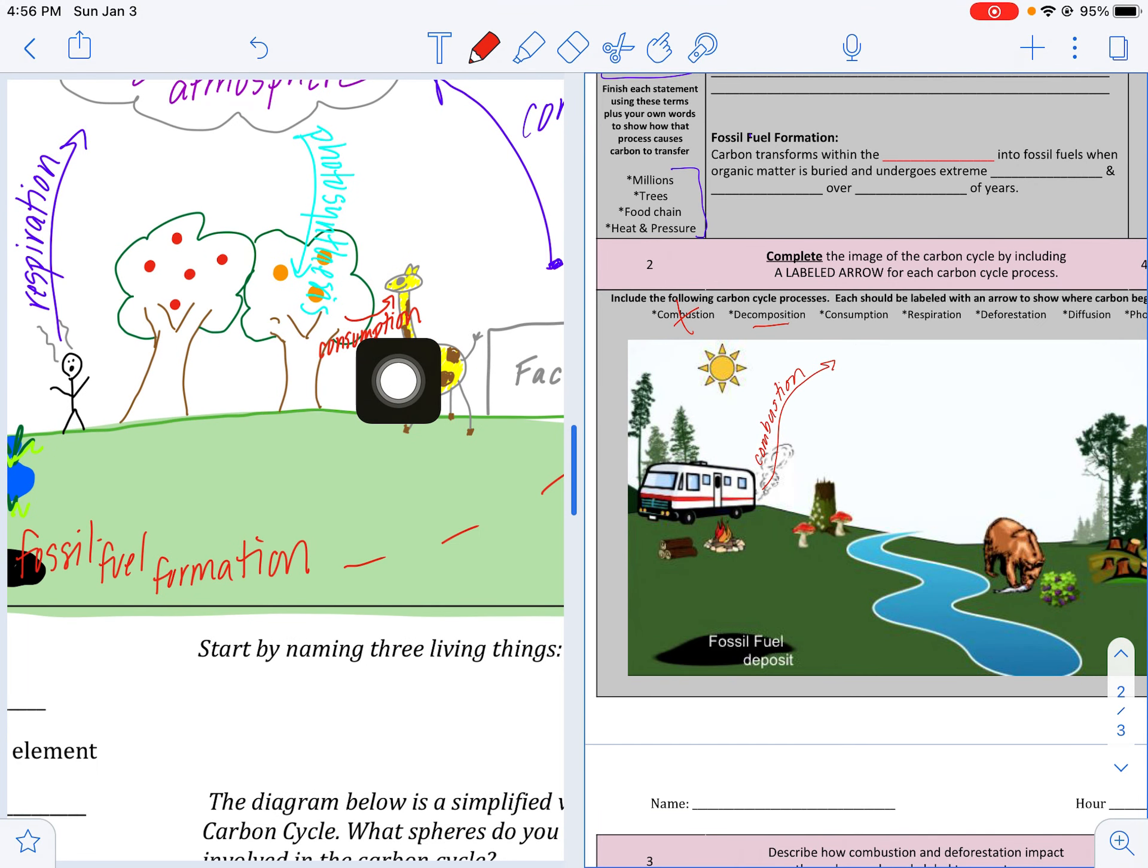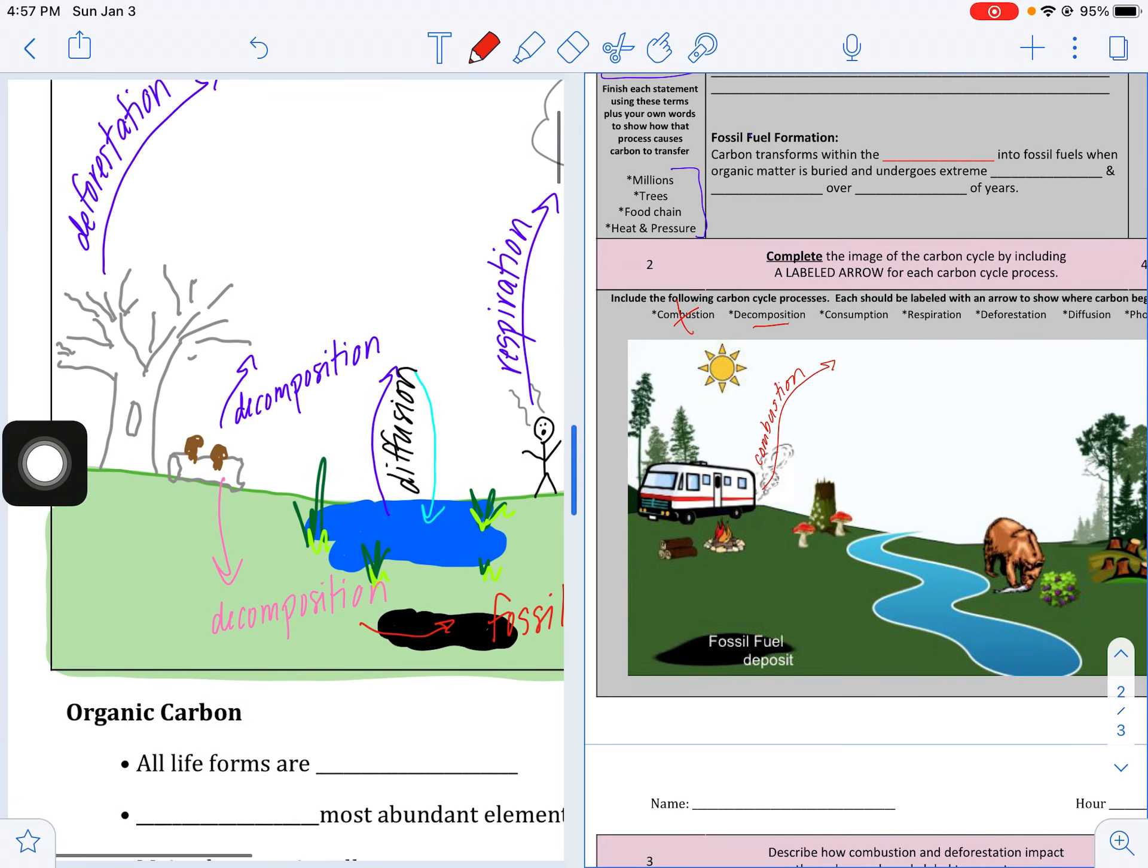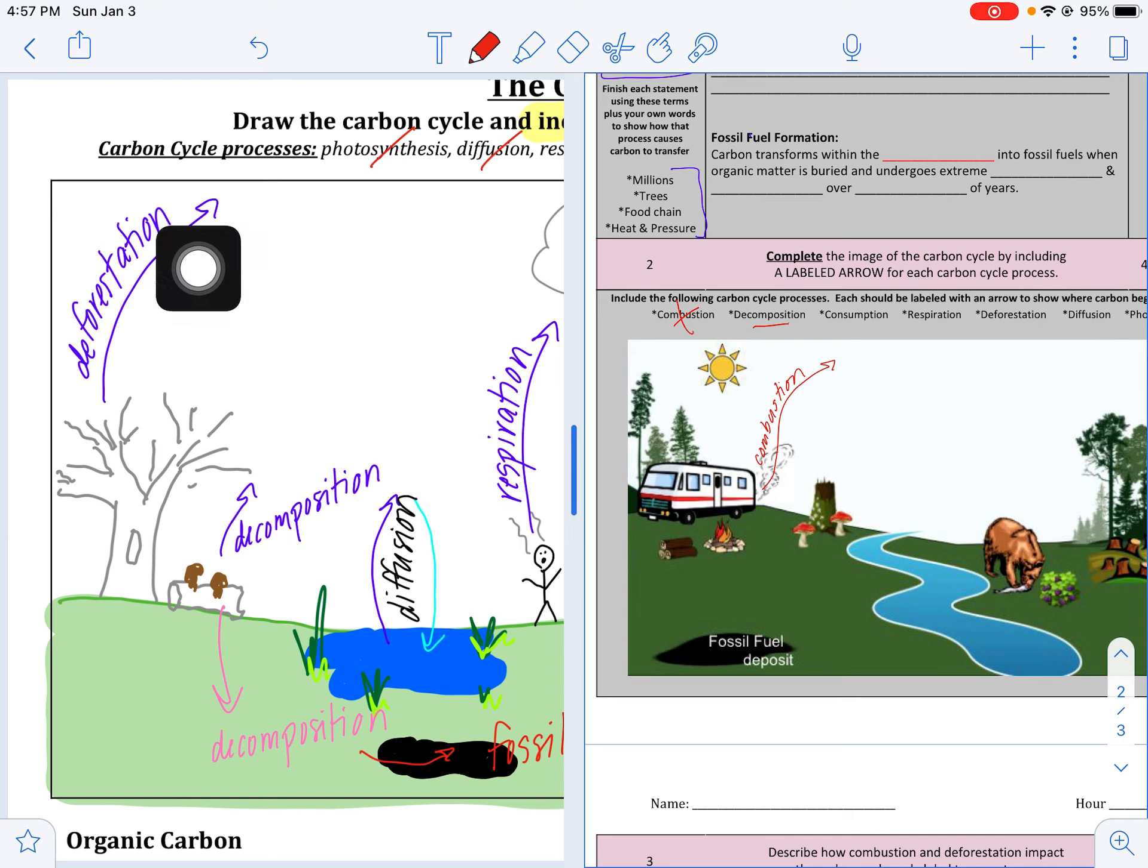Respiration, we're looking for release into the atmosphere from plants or animals exhaling, so you can find a spot for that as well. Deforestation obviously is coming from removal and burning of trees, so looking for the cut down trees.